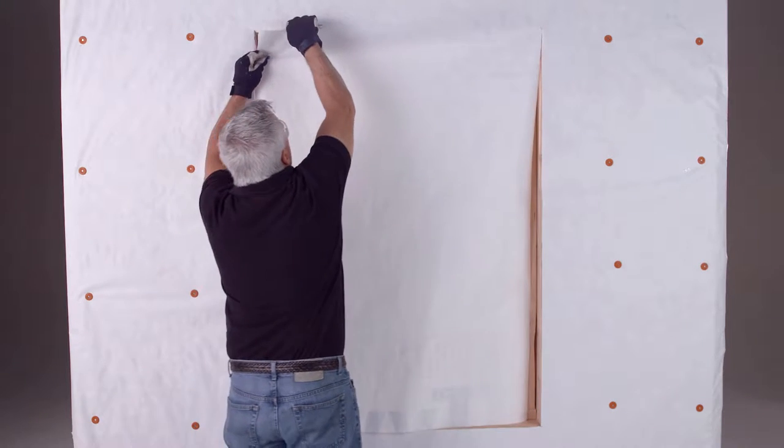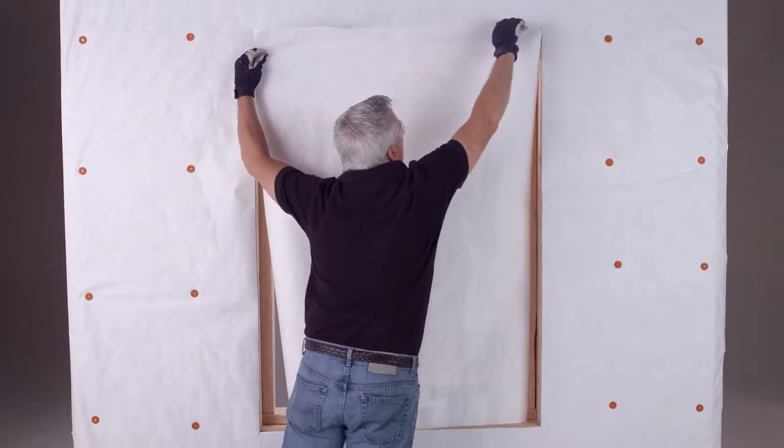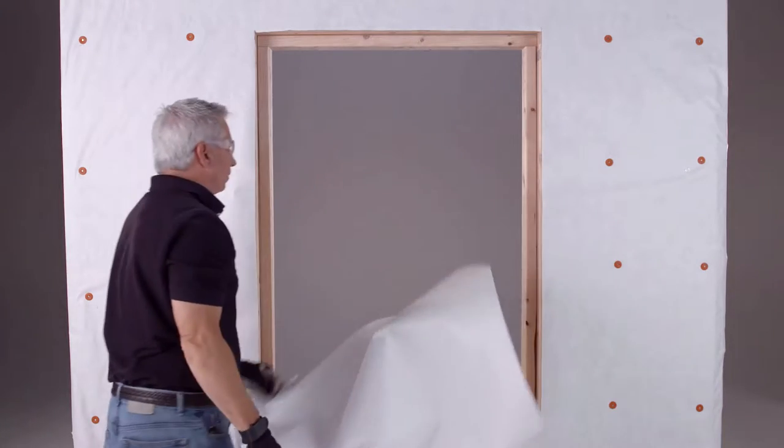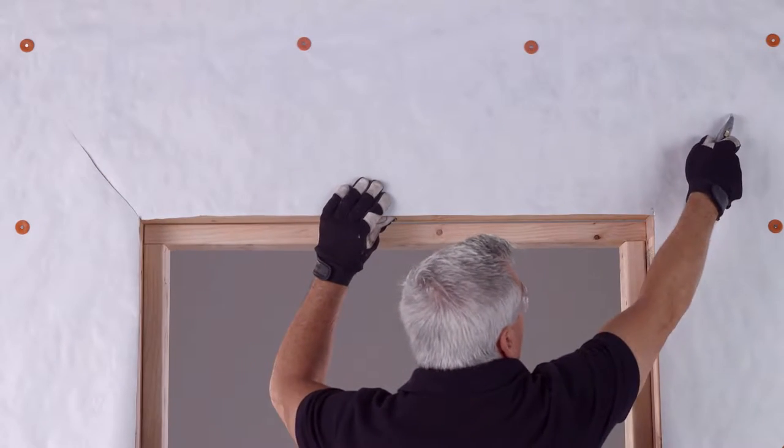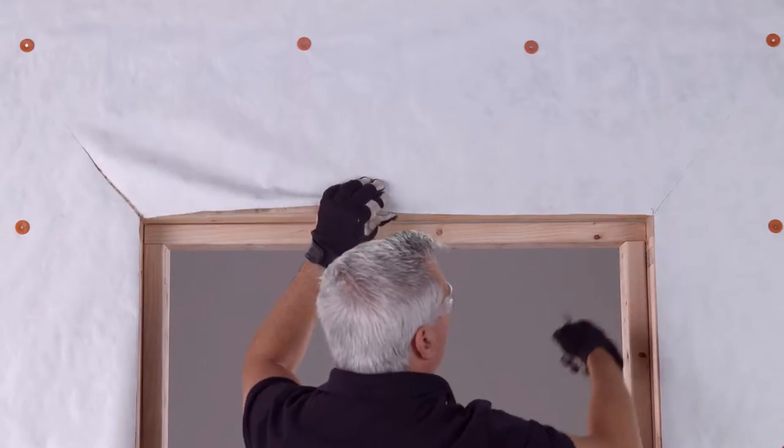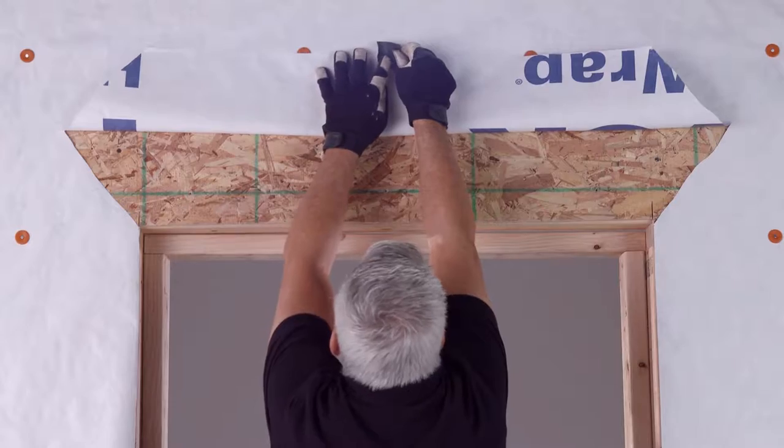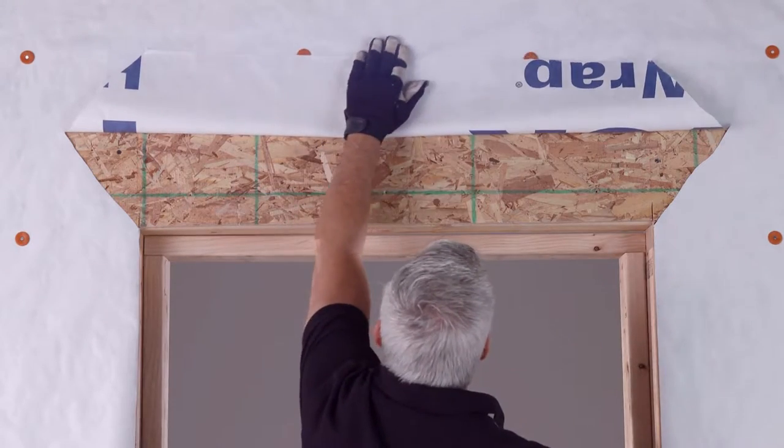First, expose the rough opening by cutting the WRB around the edges and remove it. Then cut the WRB at a 45 degree angle at the head and side jam joints on each side. Now, temporarily fasten the top flap with a piece of tape.